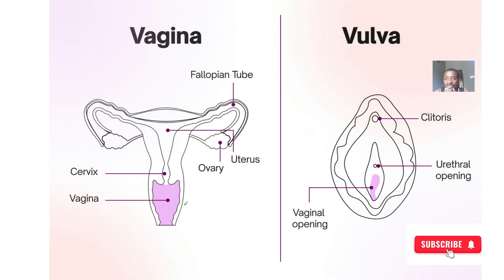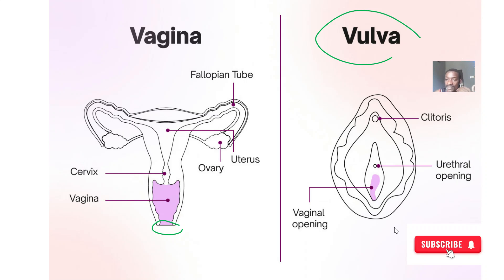The anatomy of the vulva is as follows. This is your full vagina, and the outside of the vagina is known as the vulva, containing the clitoris, the urethral opening, the labia minora, labia majora, and the vaginal opening. This picture summarizes everything we're about to discuss.